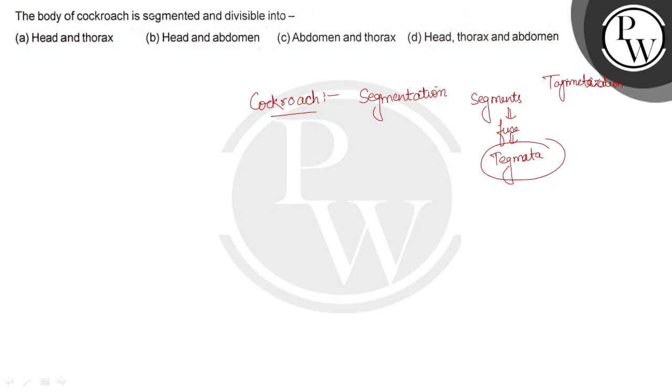In cockroaches there is tagmata formation and what is tagmata? Tagmata is the body which is made from segment fusion. For example, in case of cockroach there are three regions: head, thorax and abdomen. Body of a cockroach is divided into three tagmata and these are the head, thorax and the abdomen.